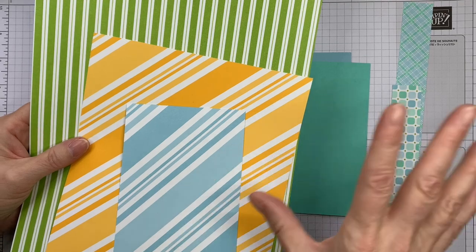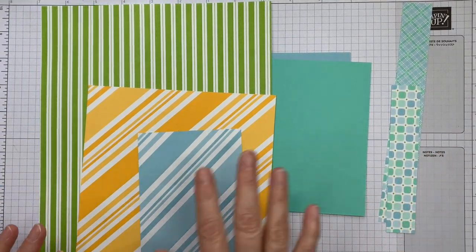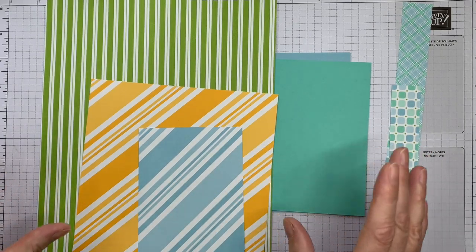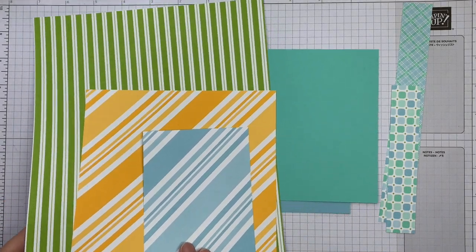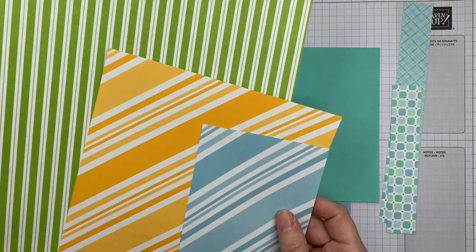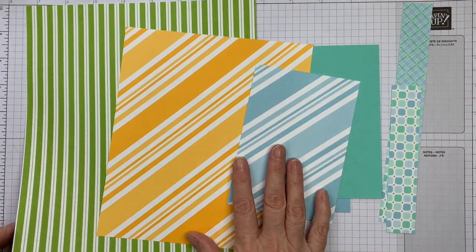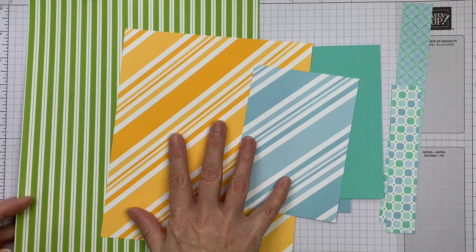I recently did a card where I was talking about embellishing a spotted pattern and how you can do that with your gems. So today we're going to look at stripes and this week I've been using the Dandy Designs papers, these are free with a £90 purchase during Sale-A-Bration and I've just picked out some of the striped patterns from this set.